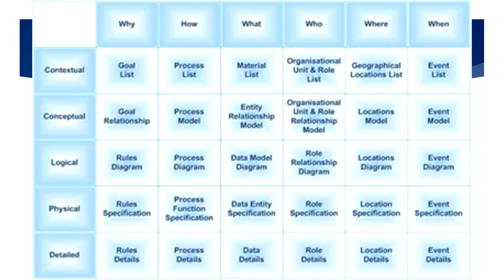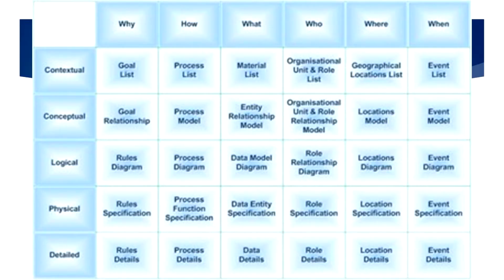Using a more simplistic view of the framework, it's easier to see how each row builds a more complex view of the enterprise than the row above it. In this image, we see the first row answering contextual questions about the enterprise. Using the framework, we'd answer the W5H questions from that contextual view — why we are performing a function can lead to a list of business goals, and when could lead to a schedule, series of milestones, or even just a start date. Moving to the conceptual row, we add more detail to the matrix and start to build models to answer the W5H questions. For example, asking the how question now leads to developing a process model of how different actions would flow together to complete that process. Asking why from a conceptual view may help fill that process model as it links together goals that were defined in the contextual view. Goals listed in the contextual cell feed the goal relationship cells in the conceptual view.